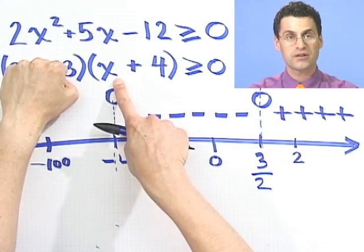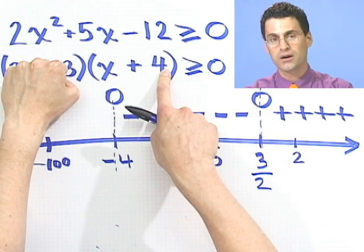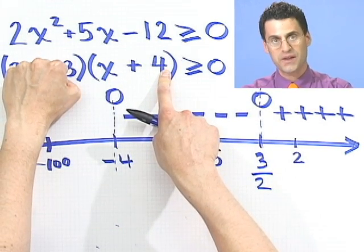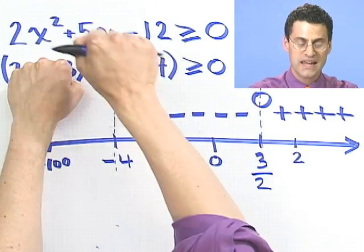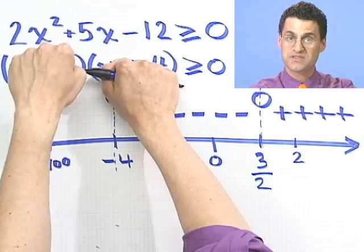Now what happens when I plug in minus 100 in here? I have minus 100 plus 4. Well, that plus 4 helps a little bit, but that thing is mighty negative, right? In fact, negative 96. So this is negative. Negative times a negative, what is that? That's a positive something.